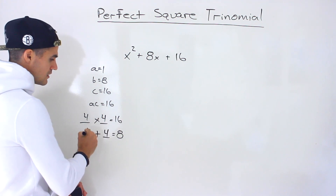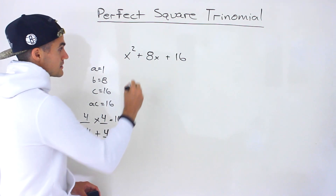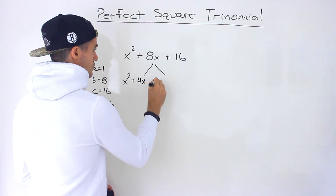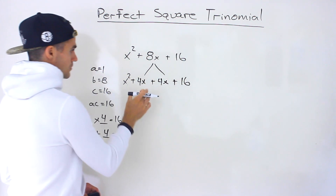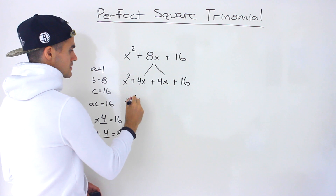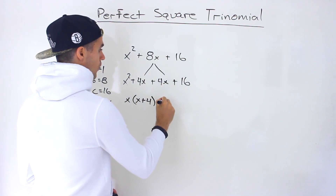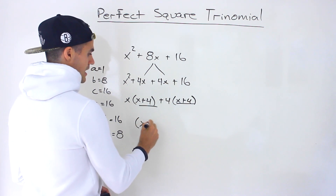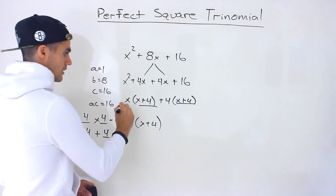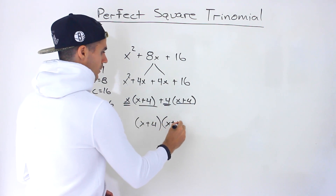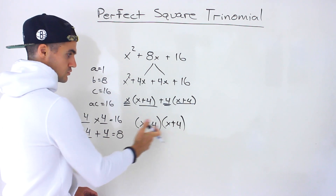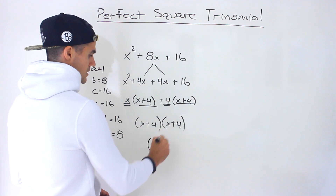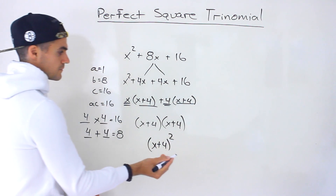4 times 4 is 16, and 4 plus 4 is 8. So we decompose this middle term into those two terms. By factoring by grouping, from the first two terms you take out an x, leaving x plus 4; from the last two terms you take out a 4, leaving x plus 4. The binomial common factor is the same, so we take it out and we're left with x plus 4 times x plus 4.